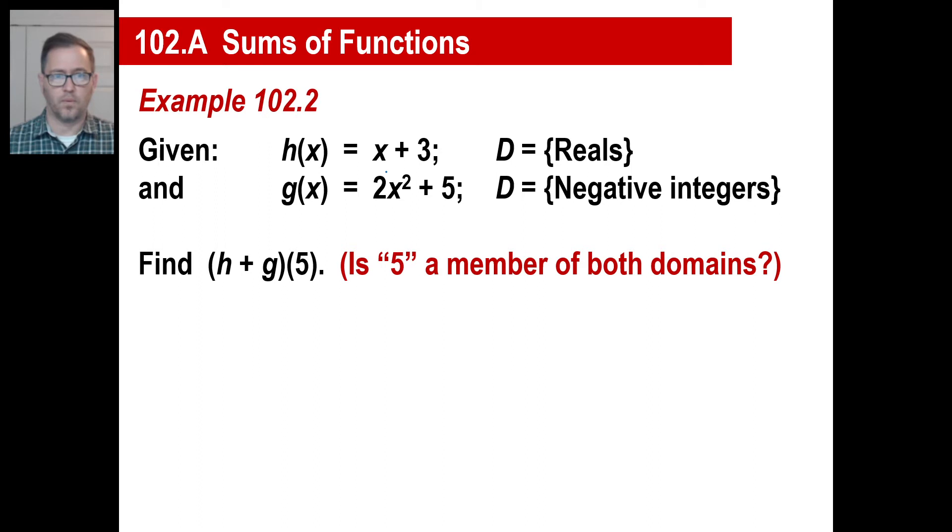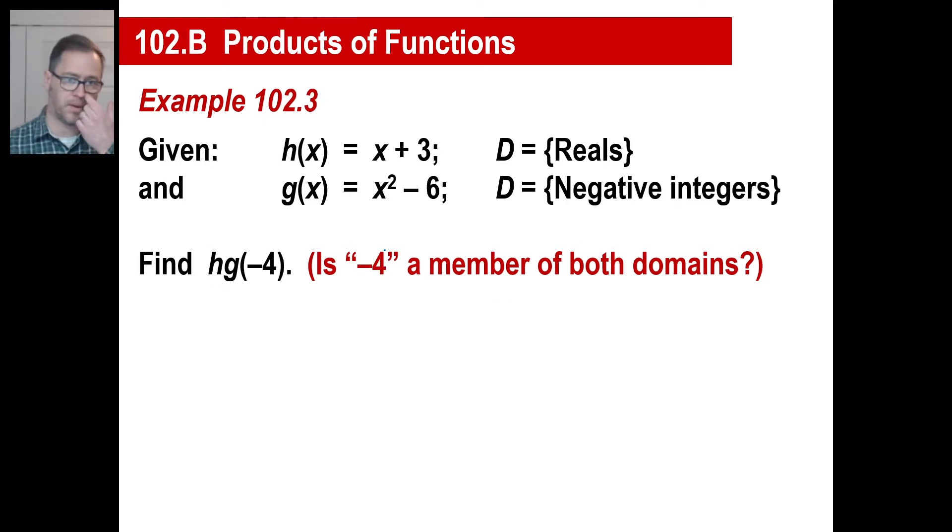We'll try it together. We have h of x is this, g of x is that, and we'll find h plus g of five. Which means we're just gonna put in the five again, every time we see an x and just substitute it in. The only question is, this is what you're allowed to use, reals and negative integers. Is five a member of the reals? Yes. Is it a member of the negative integers? No, it's not. So, there is no solution to this. You can just go on to the next problem. No way to solve this.